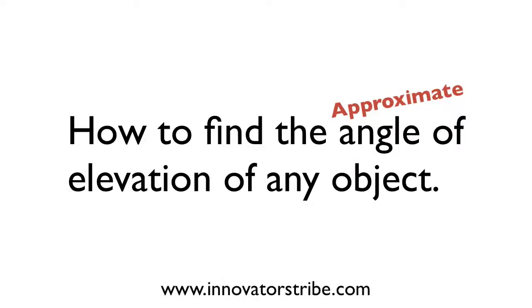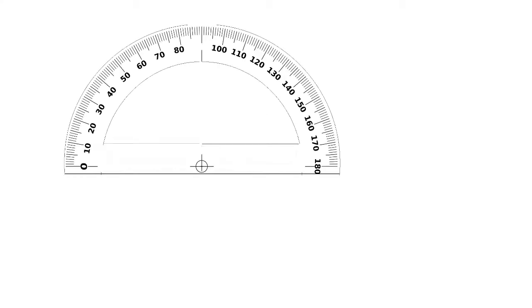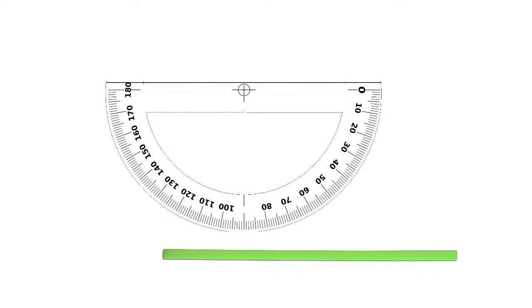One way to find the approximate angle of elevation of an object is to make a simple angle measuring tool out of a protractor and a straw. Turn the protractor upside down and tape the straw to the edge of the protractor.